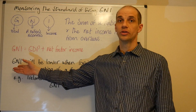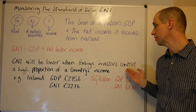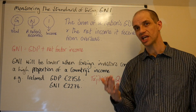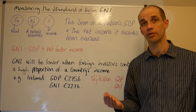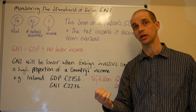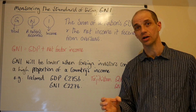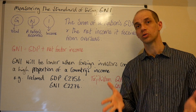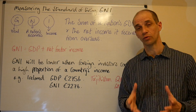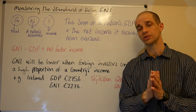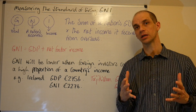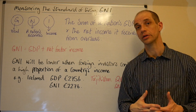The gross national income will be lower when foreign investors control a high proportion of a country's income. If we take Ireland as a good example, Ireland is renowned for having a very low corporation tax rate. Because of that, they have attracted a lot of inward FDI from multinational corporations who have set up their European headquarters in Ireland, which is within the European Union, providing a number of trade advantages for those multinationals.